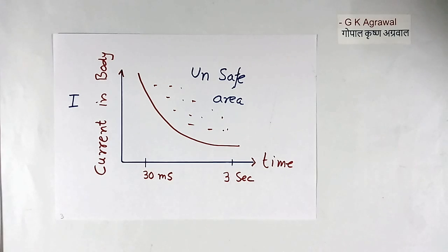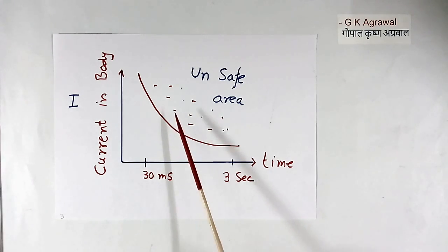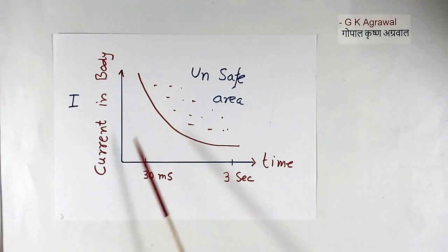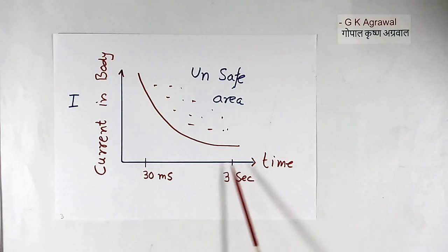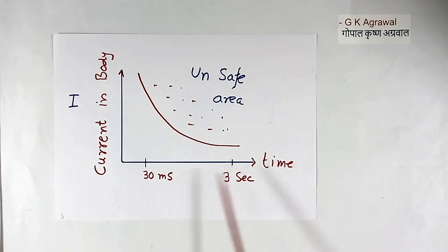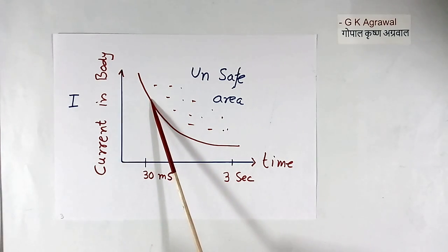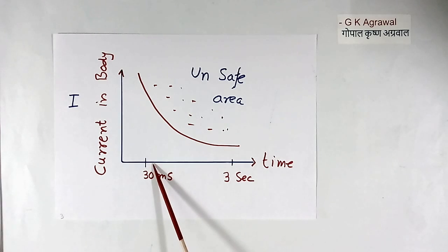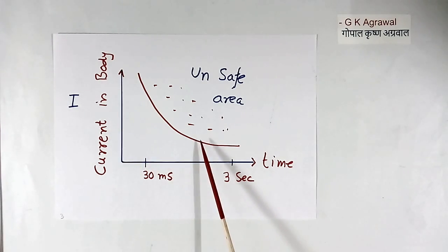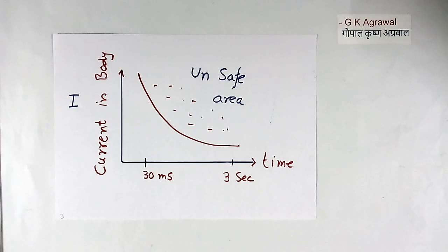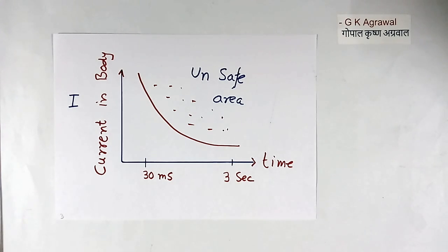How much current can a body take safely? This is shown in this plot. The unsafe area is indicated here — this axis is current in the body, and this axis is the time for which current flows in the body. If current is more, then it can flow only for a short time. If current in the body is less, then it is allowed for a longer time. Now, how do we decide whether to select 30 mA or 100 mA for the RCCB?